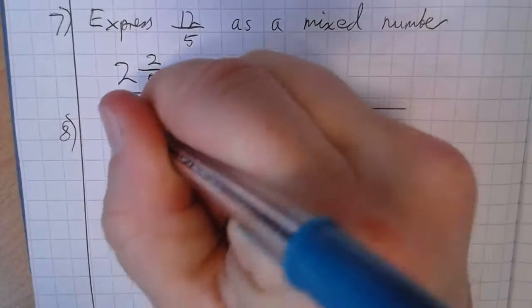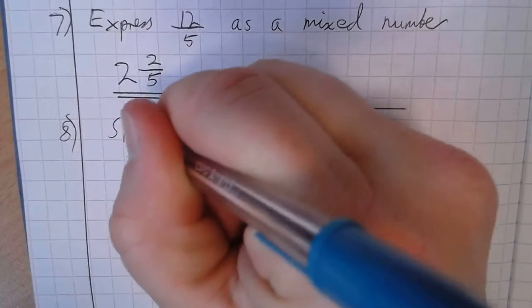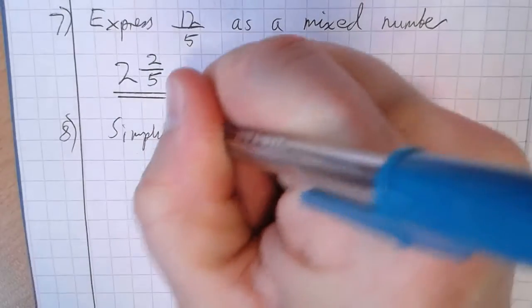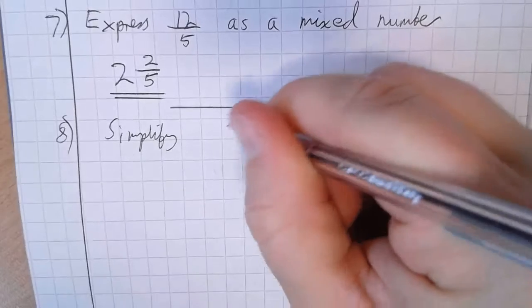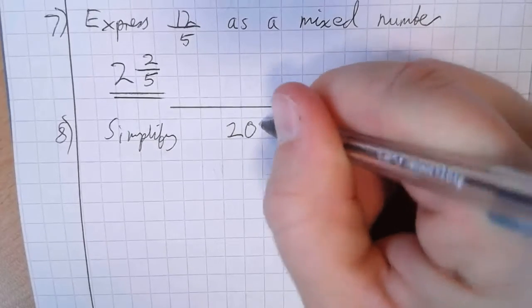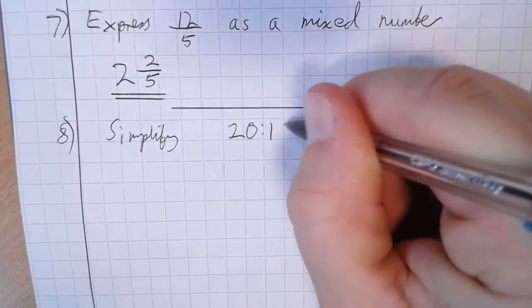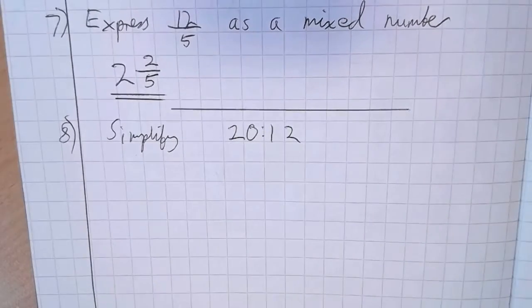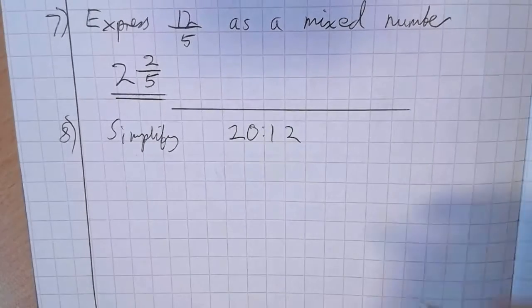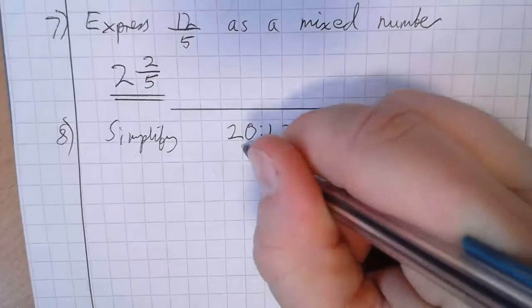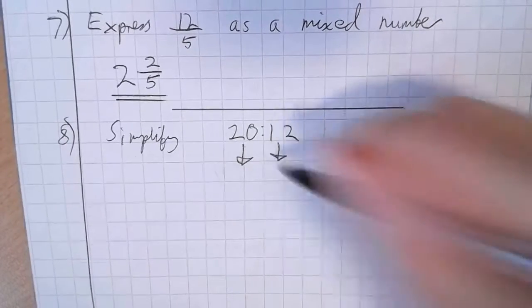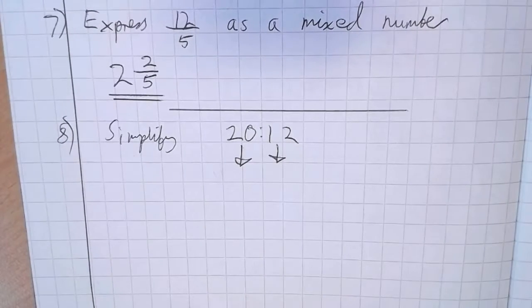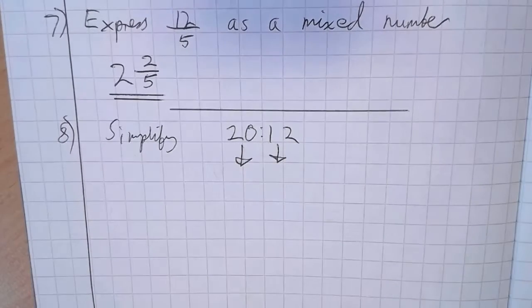Question 8. Simplify 20 to 12. This is just the same way as we simplify fractions. I'm going to look for a common factor here — what can I divide them both by?